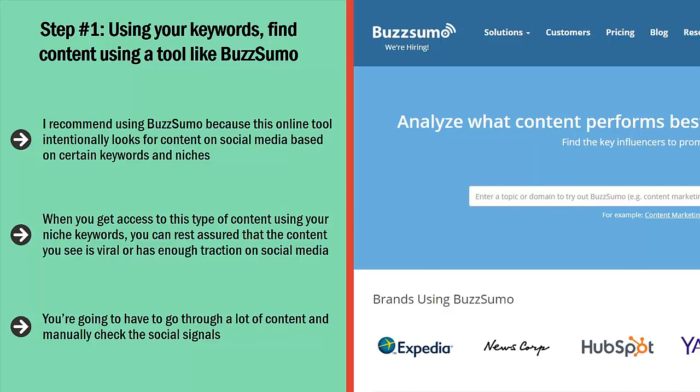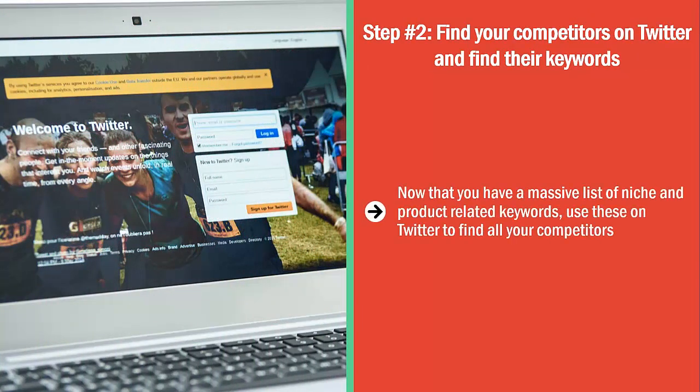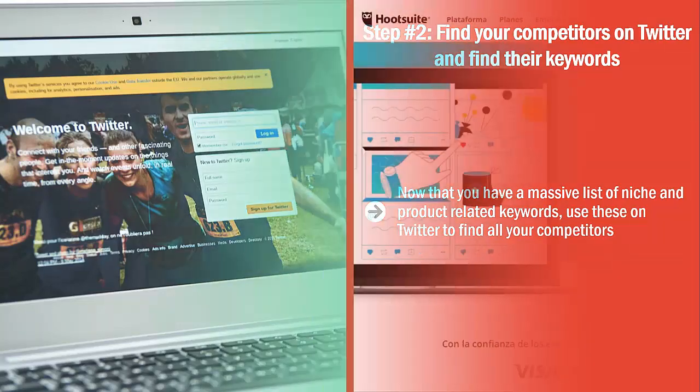Step number two: find your competitors on Twitter and find their keywords. Now that you have a massive list of niche and product-related keywords, use these on Twitter to find all your competitors — get as many of them as possible. Next, look at the hashtags that they normally use with their posts and copy and paste them into a file. Get as many of them as possible.